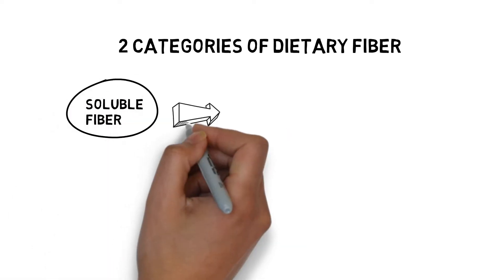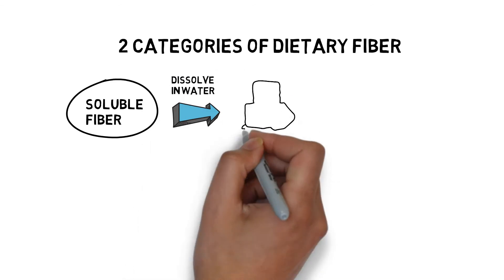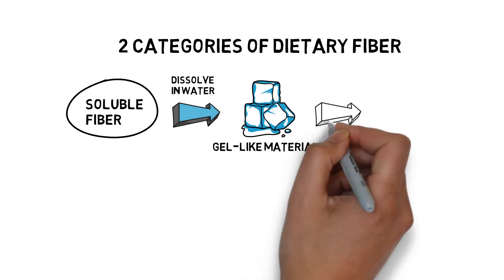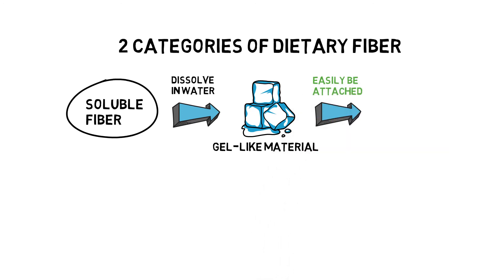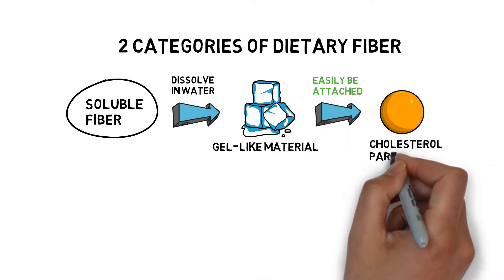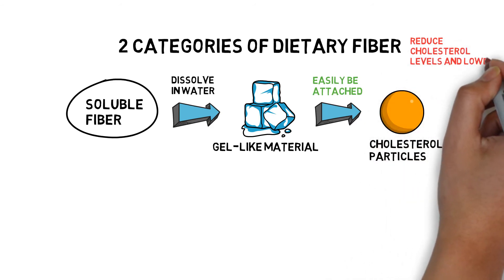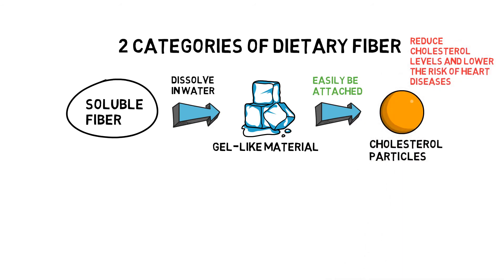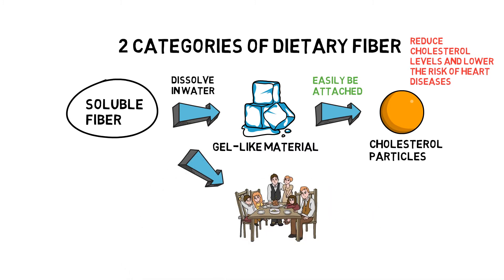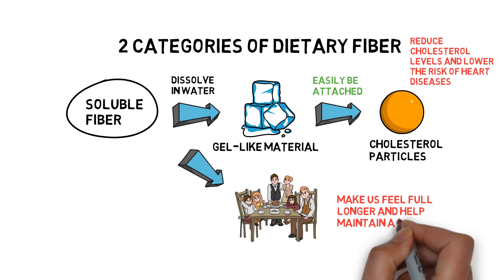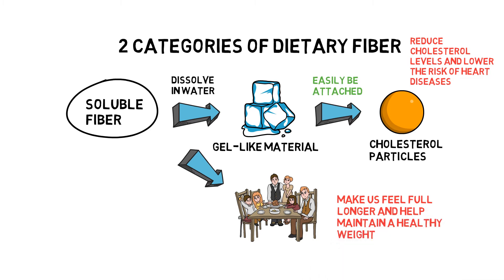Soluble fiber can dissolve in water and then form a gel-like material in the digestive system, and they will easily be attached to cholesterol particles and then get them out of the body. This process can help reduce cholesterol levels and thus lower the risk of heart diseases. Due to the fact that the human body cannot break down fiber, they will not get well absorbed, which is good to control the glucose levels for type 2 diabetes. It will make us feel full longer, and the poor absorption of dietary fiber can effectively help maintain a healthy weight.